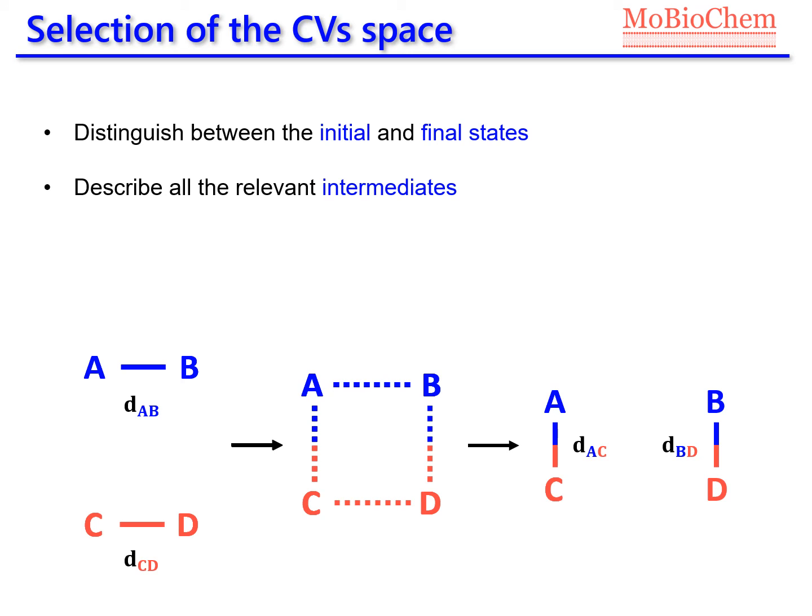For example, in a system of four atoms like the one presented here, one could choose to sample the interatomic distance between the reactive species.